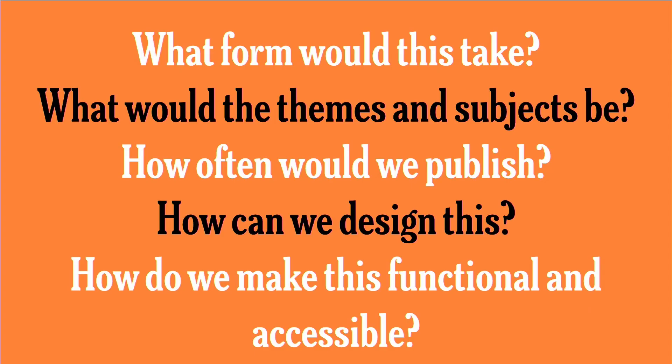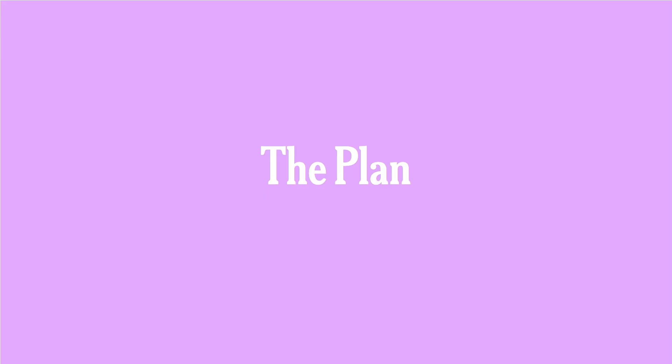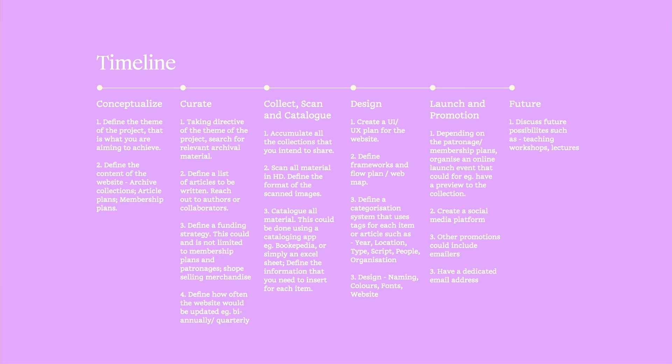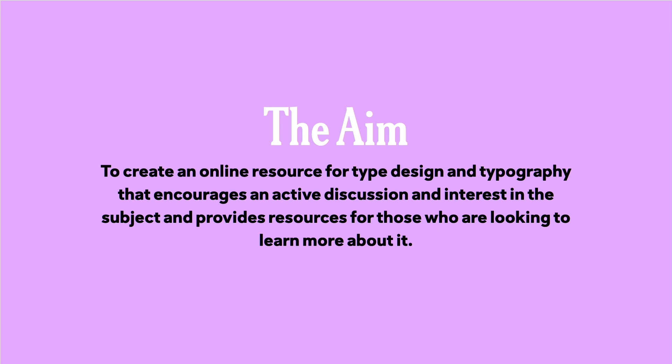I was very excited at this point, but then a whole lot of questions started popping up: What form would this take? How would the themes be defined? How often would we publish? How do we make it accessible so that all people can get information from it? So that comes to the plan. The first thing we did was define a timeline — everything from the conceptualization of the gazette right through to future plans. Though we didn't stick to every single point, it still really helped guide us through the implementation of the entire gazette. We defined the aim right at the beginning: to create an online resource for type design and typography that encourages active discussion and interest in the subject, and provides resources for those looking to learn more.